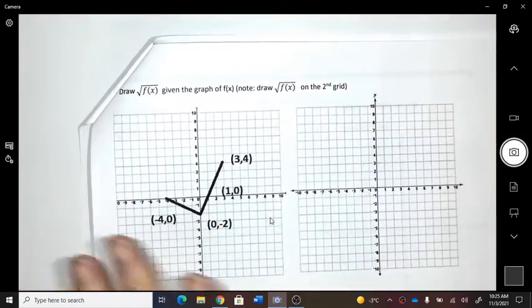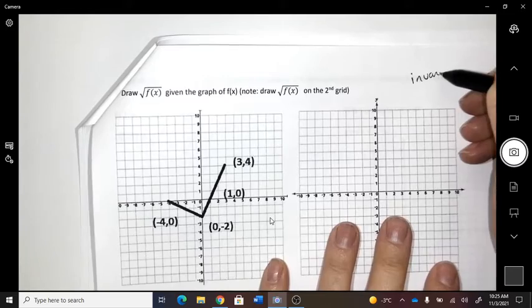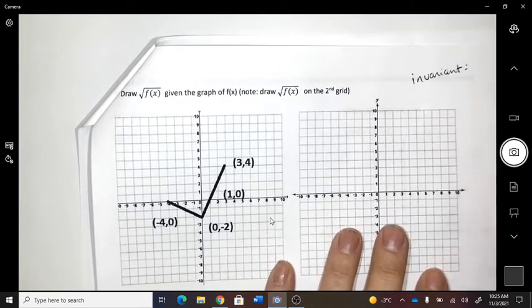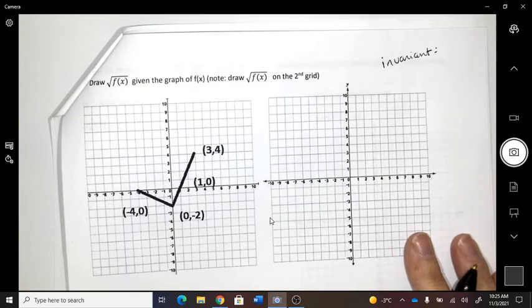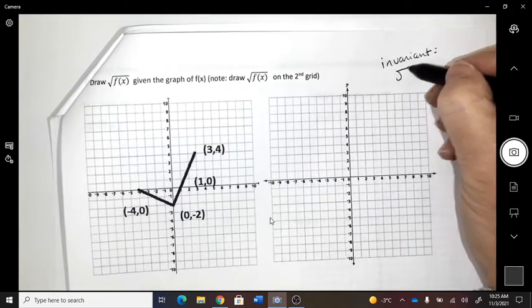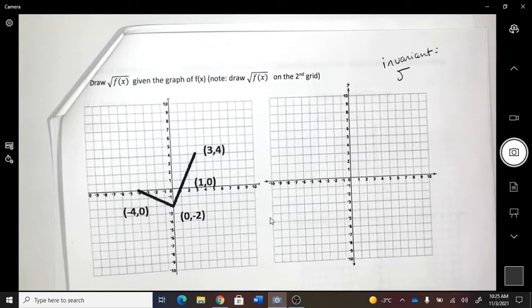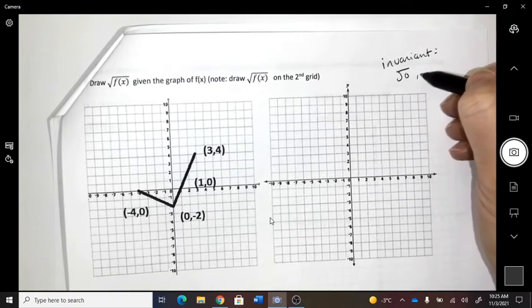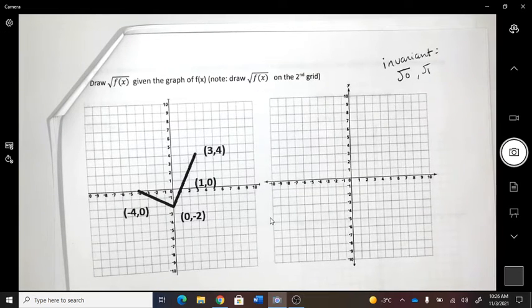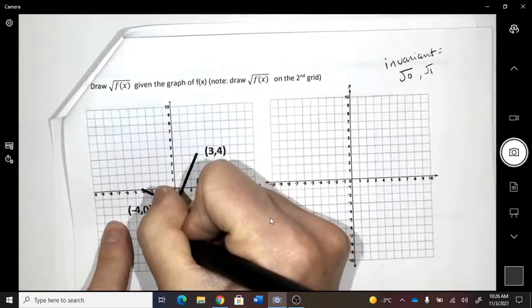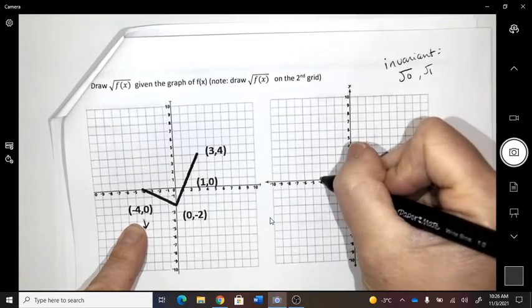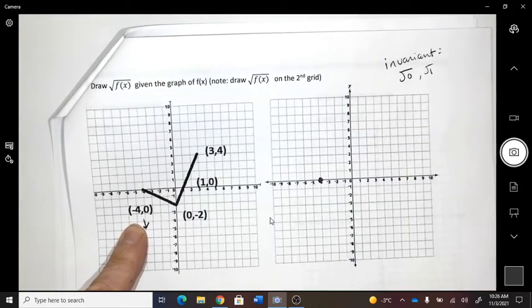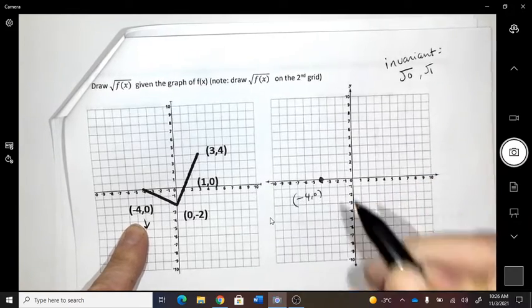So let's just talk about the rules we know. I know that there's some invariant points. What's invariant when you square root it? The square root of what is invariant? Zero or the square root of one. So if I ever see a y of zero, the point stays there. So for instance, the coordinate negative 4, 0 becomes negative 4, 0. It didn't move.